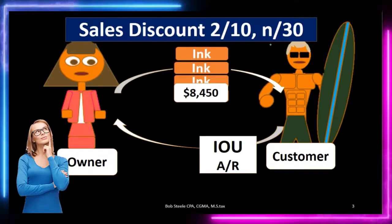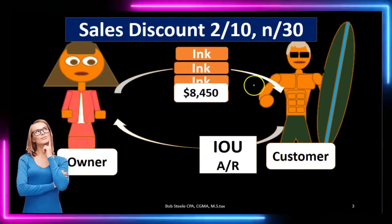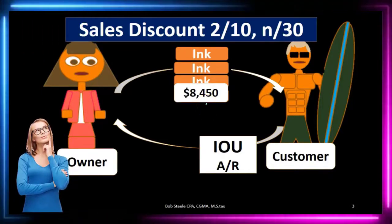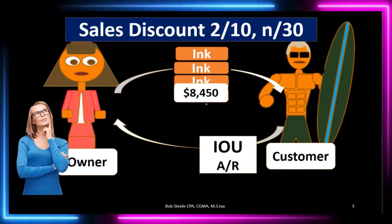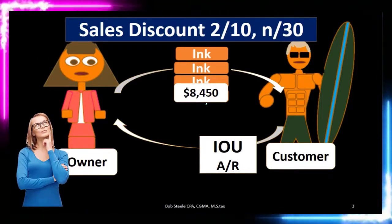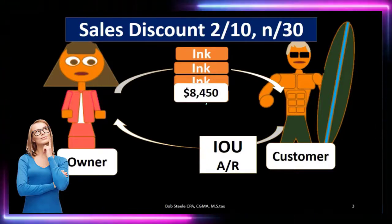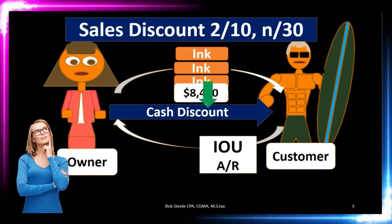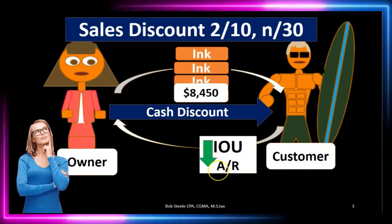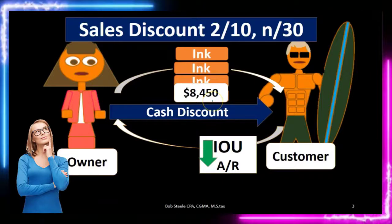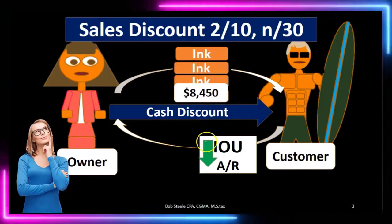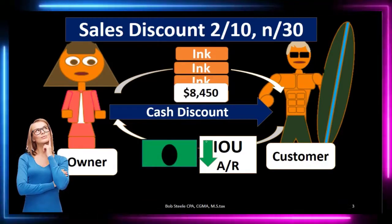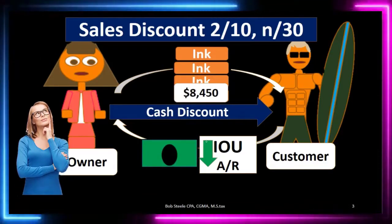Typically, we would put the sale on the books for the full price — the full sticker price, in this case $8,450 — expecting payment within 30 days. But if payment is received within the discounted time period, then we would have to account for the discount. The AR that we put on the books for the entire sticker price of $8,450 will go down because we're going to be giving a discount, and it will mean that the cash we receive will be less.